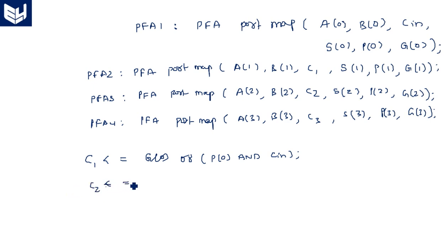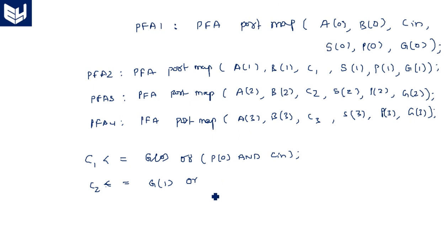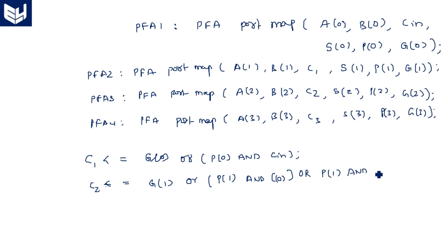Now assign the carry expressions. C1 was already calculated in the previous video: C1 <= G(0) or (P(0) and C_in). C2 is: C2 <= G(1) or (P(1) and G(0)) or (P(1) and P(0) and C_in). Note that C1, C2, C3 must be defined here before they can be used in the port maps of the partial full adders.